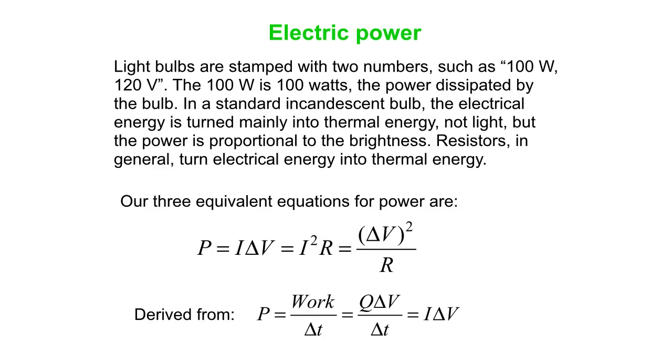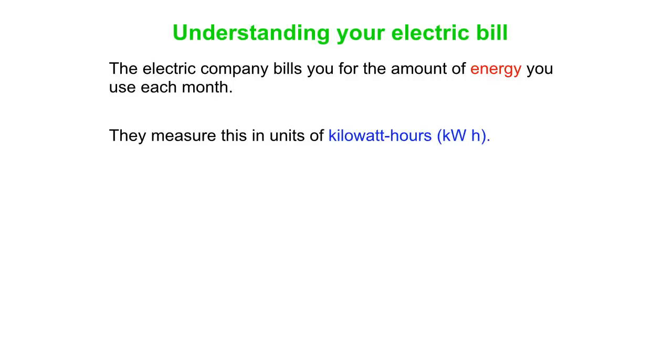So what do you pay for on your electricity bill? Well, the electric company bills you for the amount of energy you use every month. That's a reasonable thing to bill you. And they measure this in units of kilowatt hours, which actually is an energy unit.